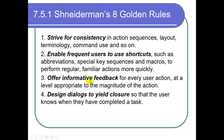Rule 3: Offer informative feedback for every user action. If I am doing something, the system must tell me what is being done and what is going on. For that purpose, I need feedback and it must be informative. For example, if I am copying files, it must show a status bar indicating that half of the files have been copied, or one third of a file has been copied. The system must provide informative feedback.